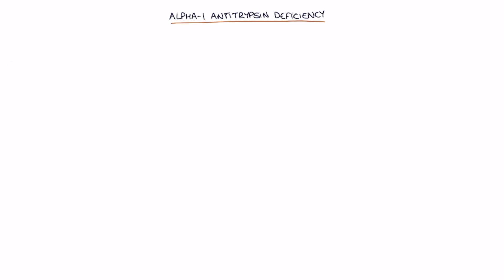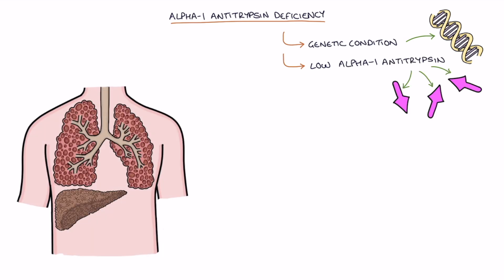So let's jump straight in. Alpha-1 antitrypsin deficiency is a genetic condition caused by low levels of alpha-1 antitrypsin. Two main organs are affected in patients with alpha-1 antitrypsin deficiency.